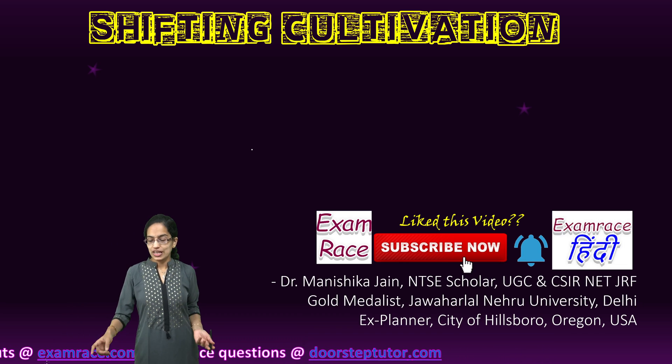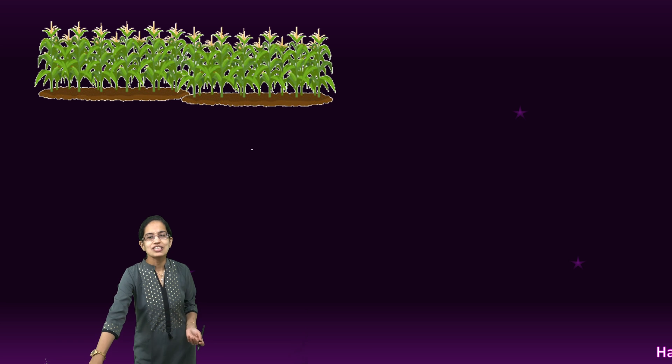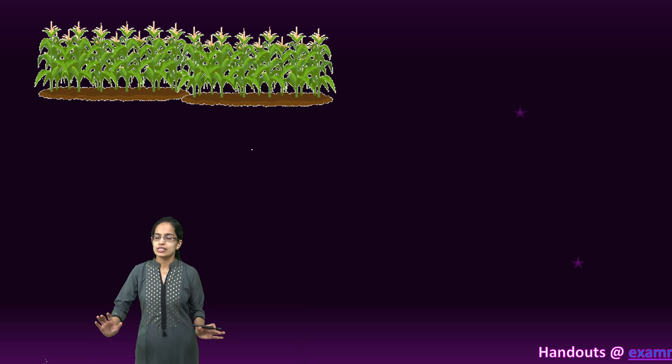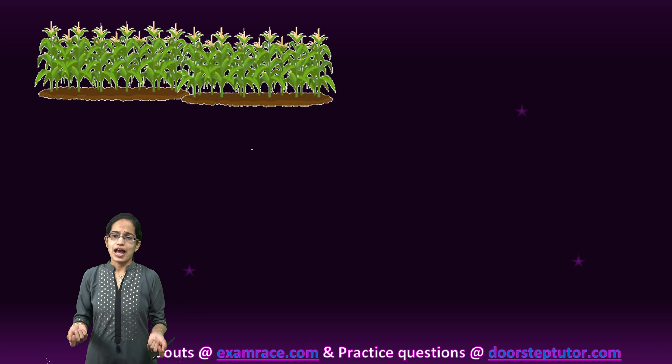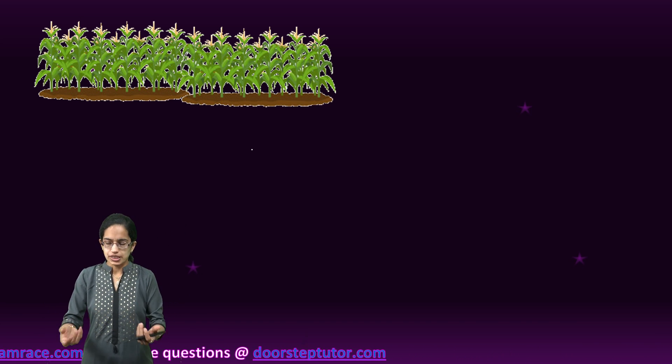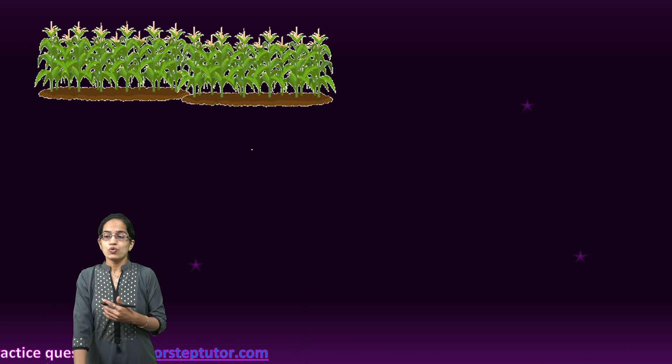Let's understand shifting cultivation. Shifting cultivation is very interesting. Let's say I have one parcel of land. What happens is I had a crop here, and now this parcel of land becomes infertile — there is a lack of nutrients present in the soil. So what we do is we simply burn that parcel of land and leave it barren for a while. Over the years, it would regain its fertility.